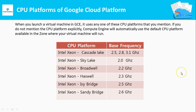Next is CPU Platforms of Google Cloud Platform. When you launch a virtual machine in Google Compute Engine, it uses one of the available CPU platforms. If you don't specify a CPU platform explicitly, Compute Engine automatically uses the default CPU platform available in the zone where your VM is running. These platforms include Intel Xeon Cascade Lake, Skylake, Broadwell, Haswell, Ivy Bridge, and Sandy Bridge, and you can see the base frequencies for all these platforms.